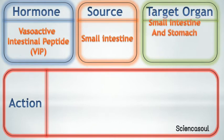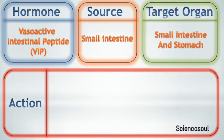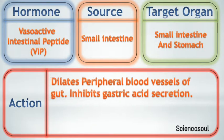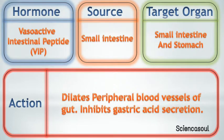Seventh hormone is vasoactive intestinal peptide, VIP. Source of VIP is the small intestine. Target organ of VIP is also the small intestine and stomach. Action of VIP is to dilate peripheral blood vessels of the gut and to inhibit gastric acid secretion.